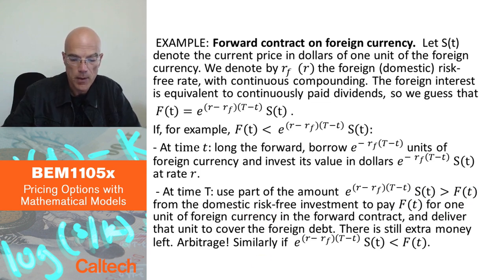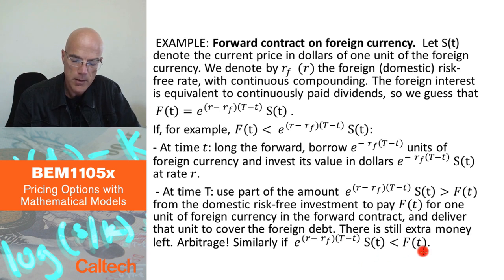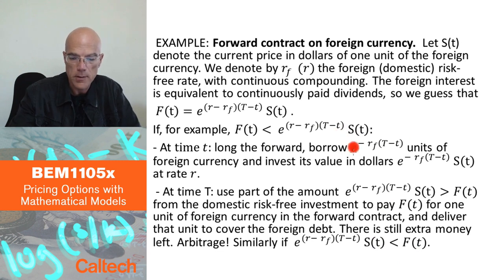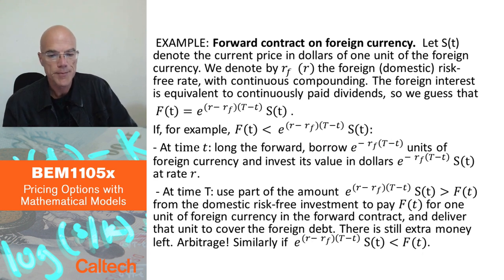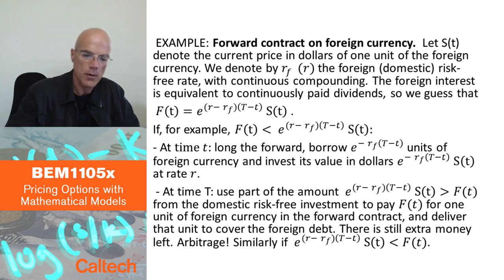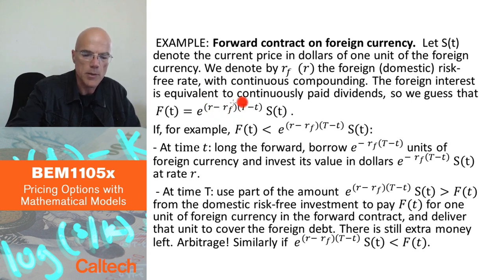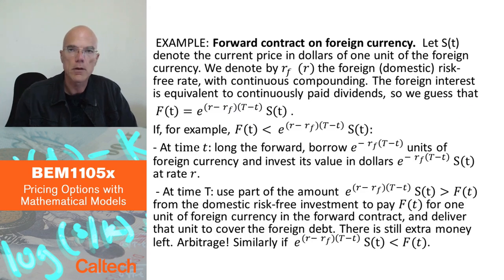That's arbitrage. I'll leave to you as an exercise to do the other case: if this product is strictly less than the forward price, you would do exactly opposite positions — go short the forward and deposit money in the euro bank. So we now have a version of the forward price on foreign currency assuming continuously compounded interest rates, and there are similar formulas if the interest rate is compounded in a different way.